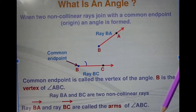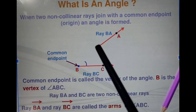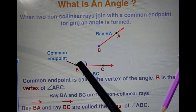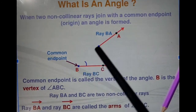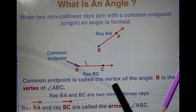An angle is made with the help of two rays in which one end meets with each other. That is the B point meets — that is the fixed vertex.